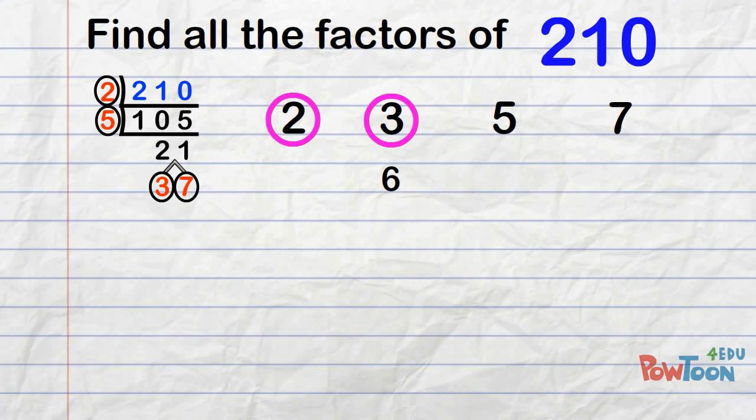2 times 5 is 10, and 2 times 7 is 14. Next line, we do 3 times everything. 3 times 2 we've already got. 3 times 5 is 15, and 3 times 7 is 21. Next line, 5. 5 times 2 is done, 5 times 3 is done, 5 times 7 is 35.